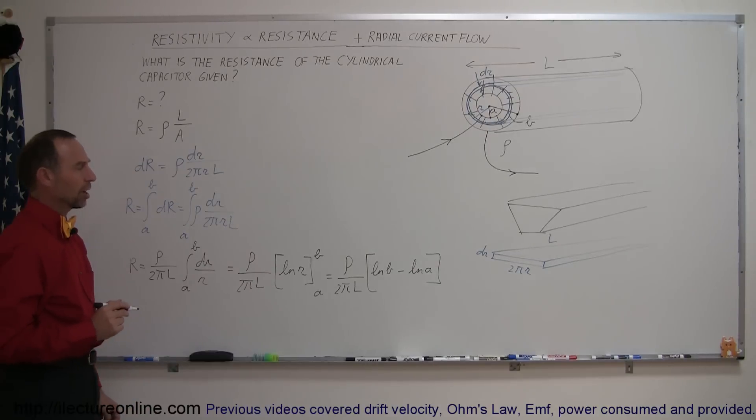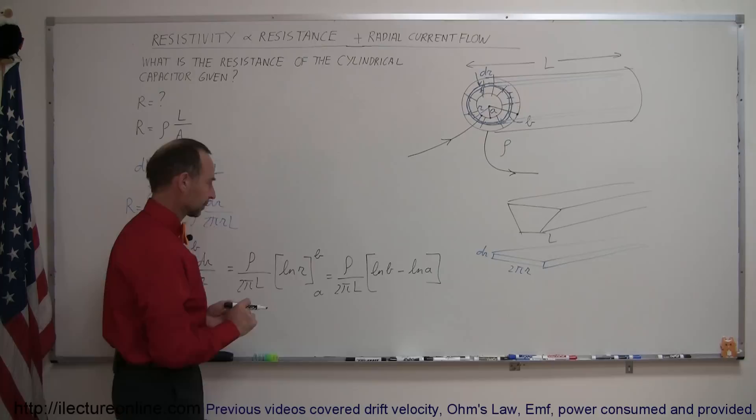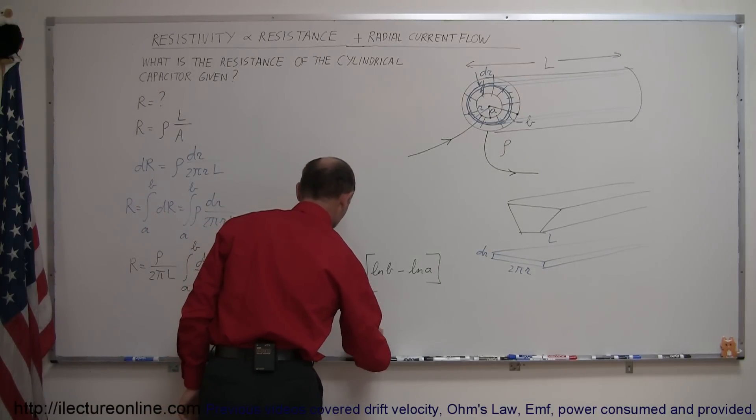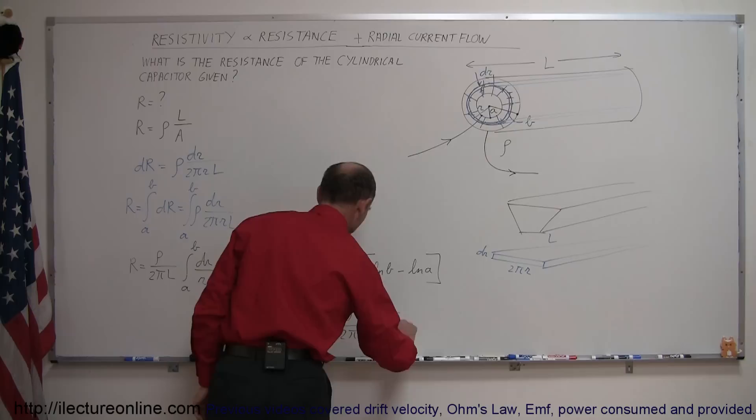Of course the natural log of B minus natural log of A can be written as the natural log of B over A. So this can be written as rho divided by 2 pi L times the natural log of B over A.